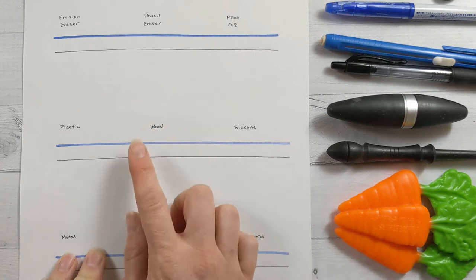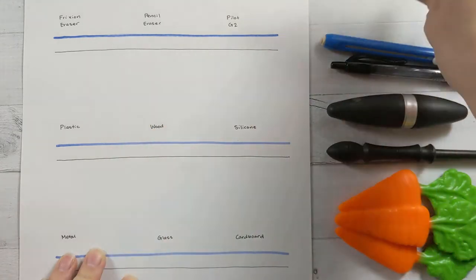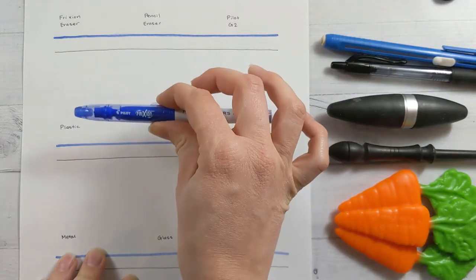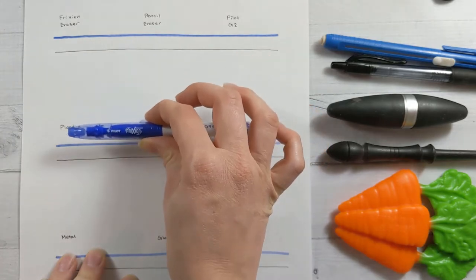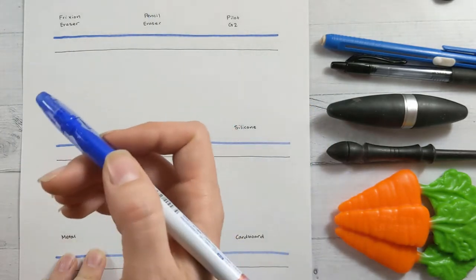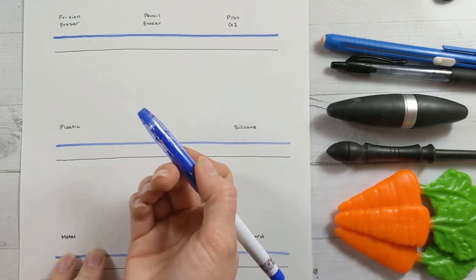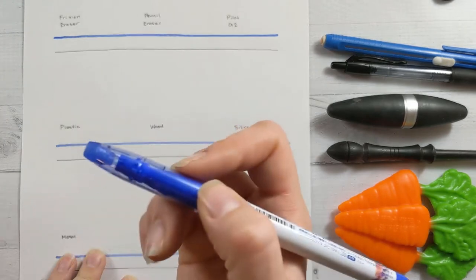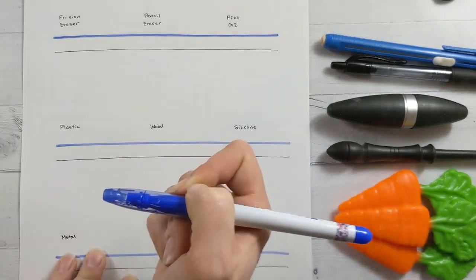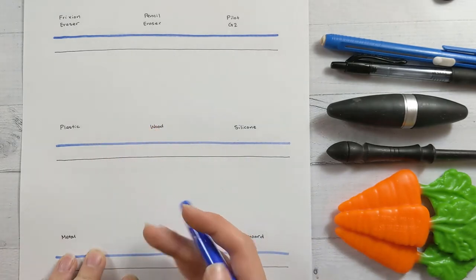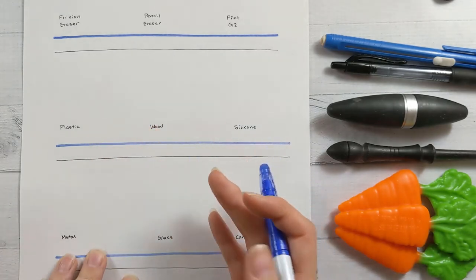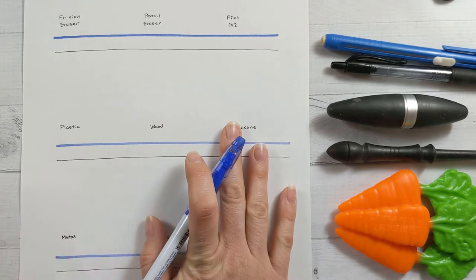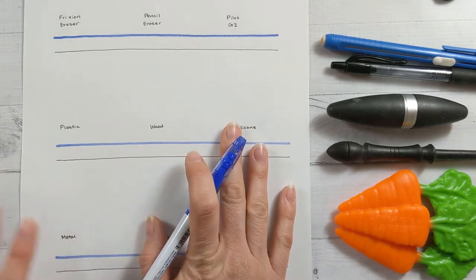They are erasable, not like a pencil. They're erasable using, as the name intimates, friction. Basically you rub and it erases because it gets hot. There's a chemical reaction from the heat to the ink that makes it turn clear, so it stays on the paper but you can't see it.